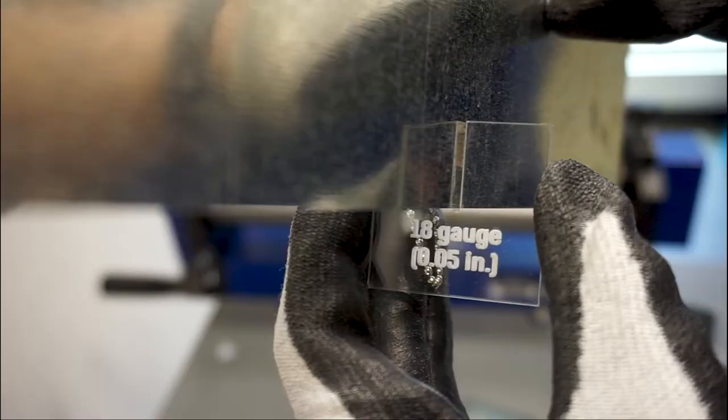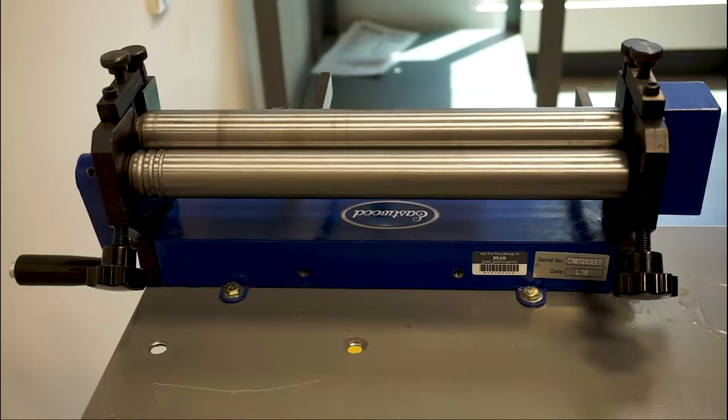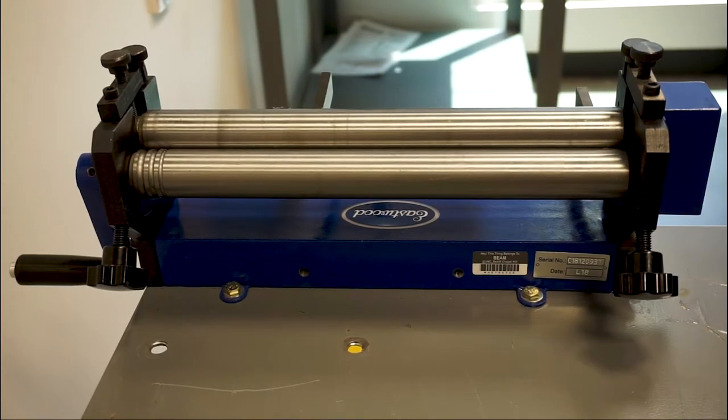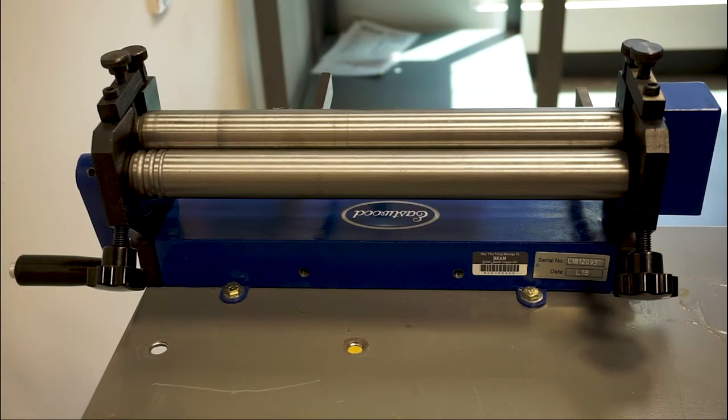The slip roll can bend up to a maximum of 18 gauge or 0.05 inch aluminum. Other metals such as steel or stainless steel of higher gauges can also be bent. Ask a staff member for clarification when not using aluminum. Your material is limited to a width of 12 inches due to the width of the tool and its rollers.